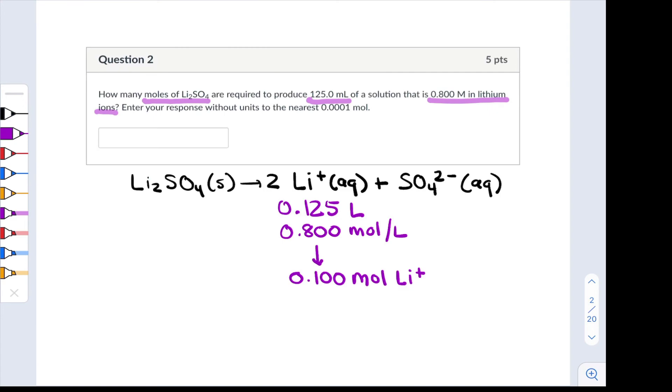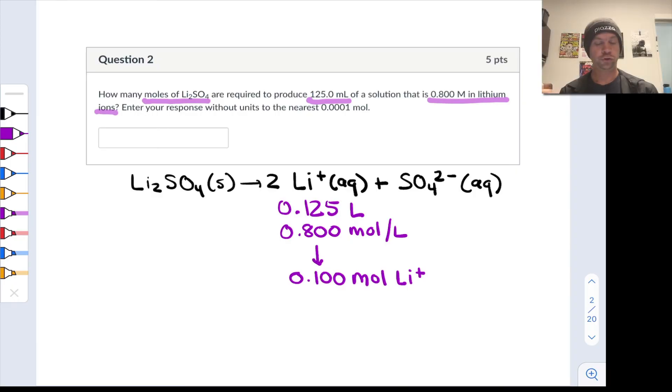How many moles of Li2SO4 corresponds to 0.1 moles of Li+? Well since I get two Li+ ions for every one formula unit of Li2SO4, the number of moles of Li2SO4 that I actually need to produce 0.1 moles of Li+ is half of this number of moles.